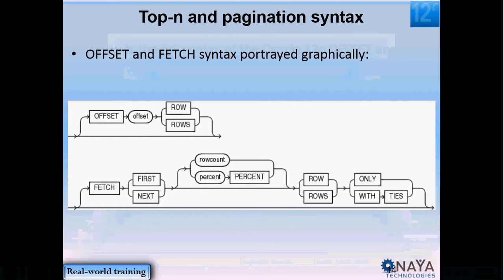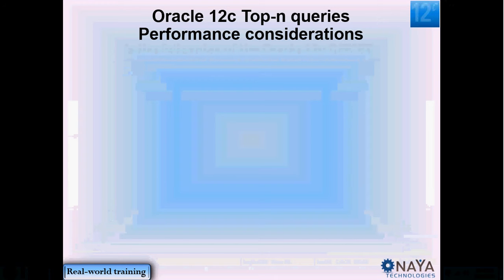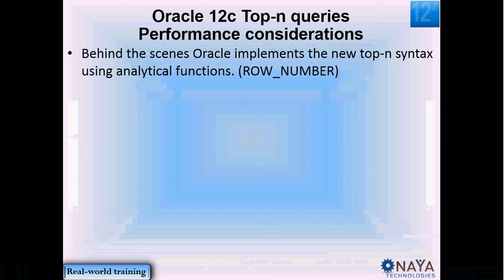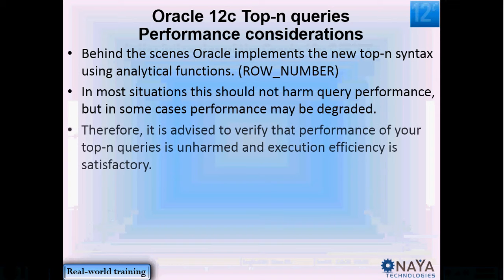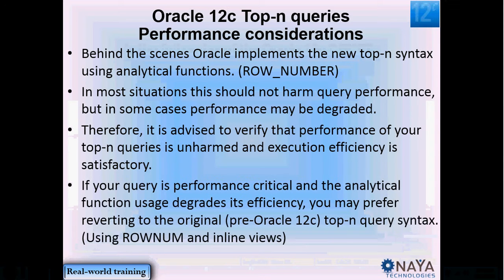This is the full syntax of OFFSET and FETCH for performing top-end queries and pagination. Before we conclude, just a small note regarding performance. Bear in mind that behind the scenes, Oracle implements this new syntax using analytical functions — also known as window functions — and specifically the ROW_NUMBER function. In most situations it should not harm your query performance, but in some cases it might. Therefore, it is advised to verify by looking at your execution plan and execution statistics to confirm that performance of your query is unharmed. If you have a performance-critical query and find that the analytical function usage degrades efficiency, you may prefer to revert back to the original pre-Oracle 12c syntax of using the inline view and the ROWNUM pseudocolumn.